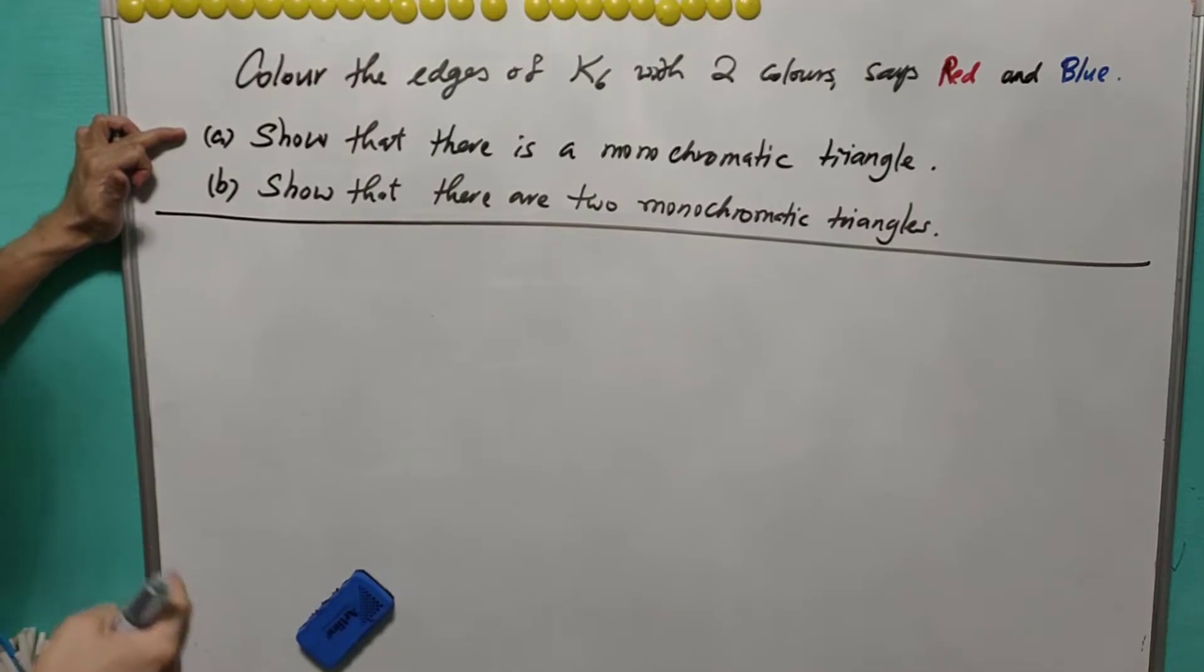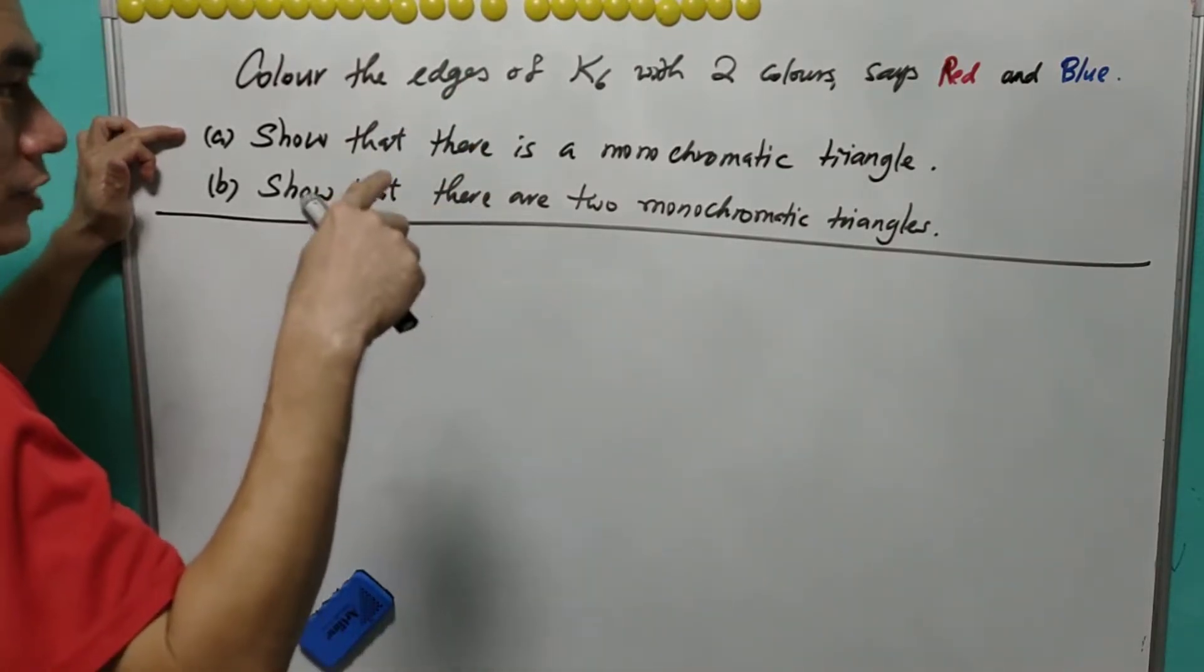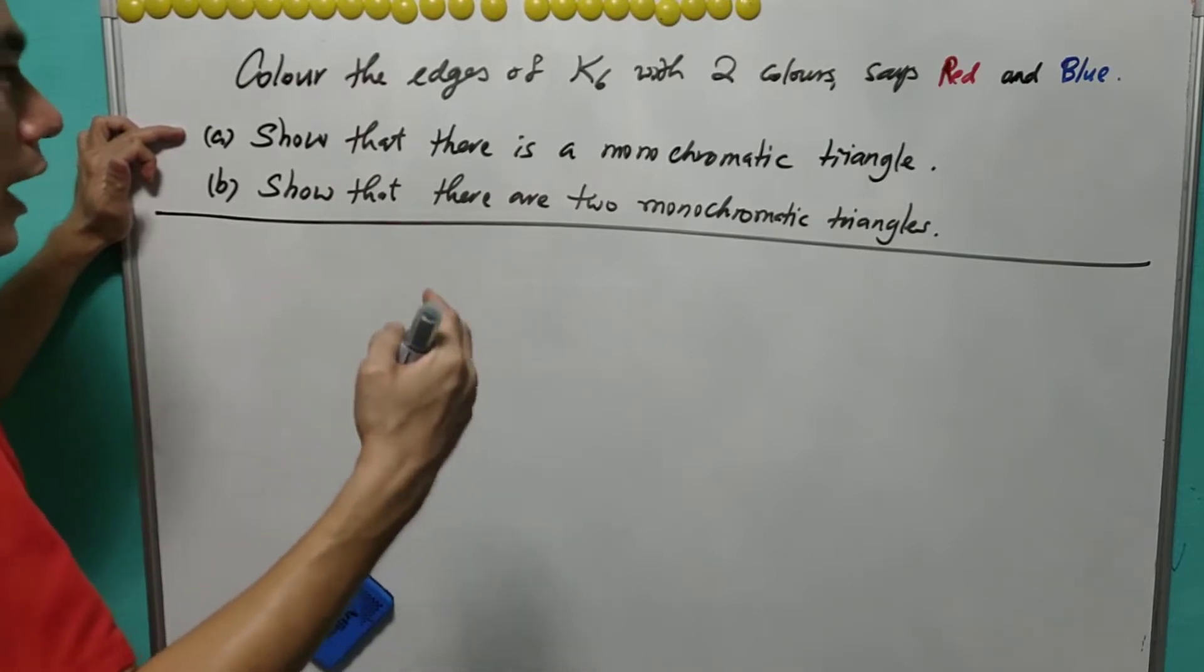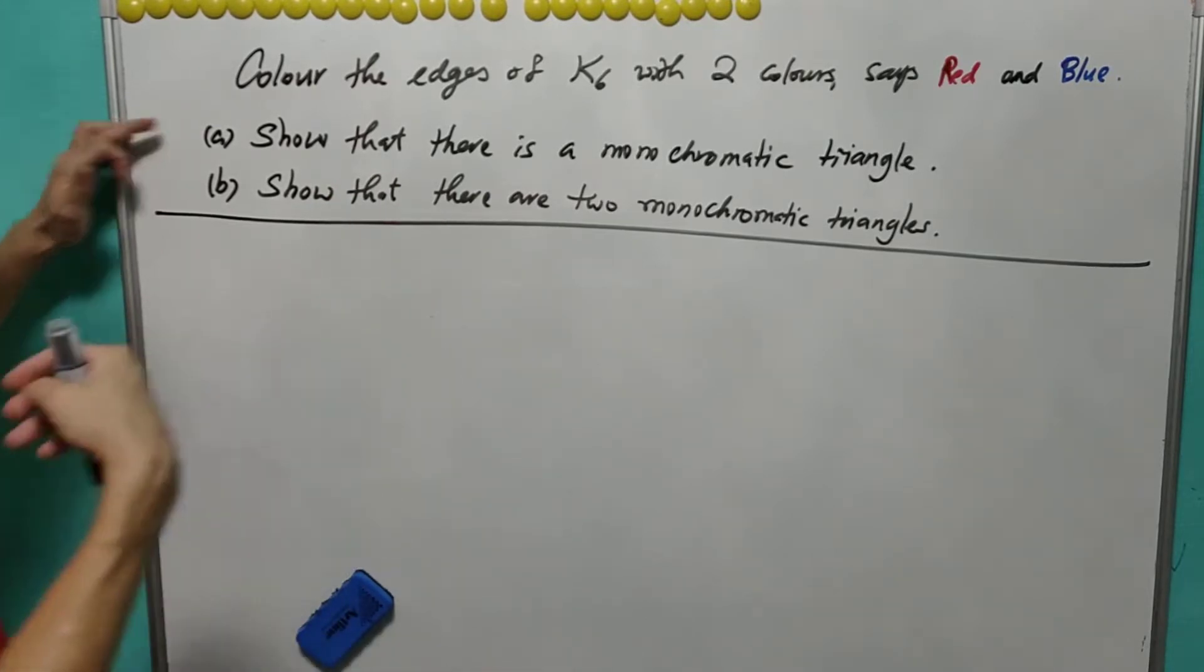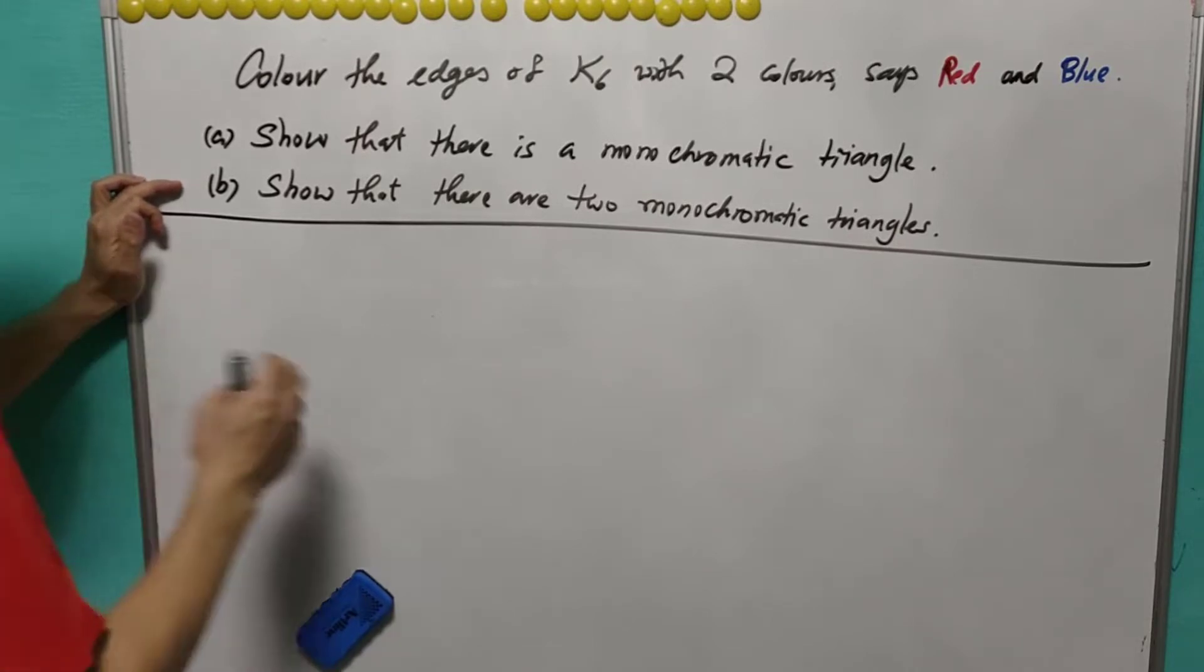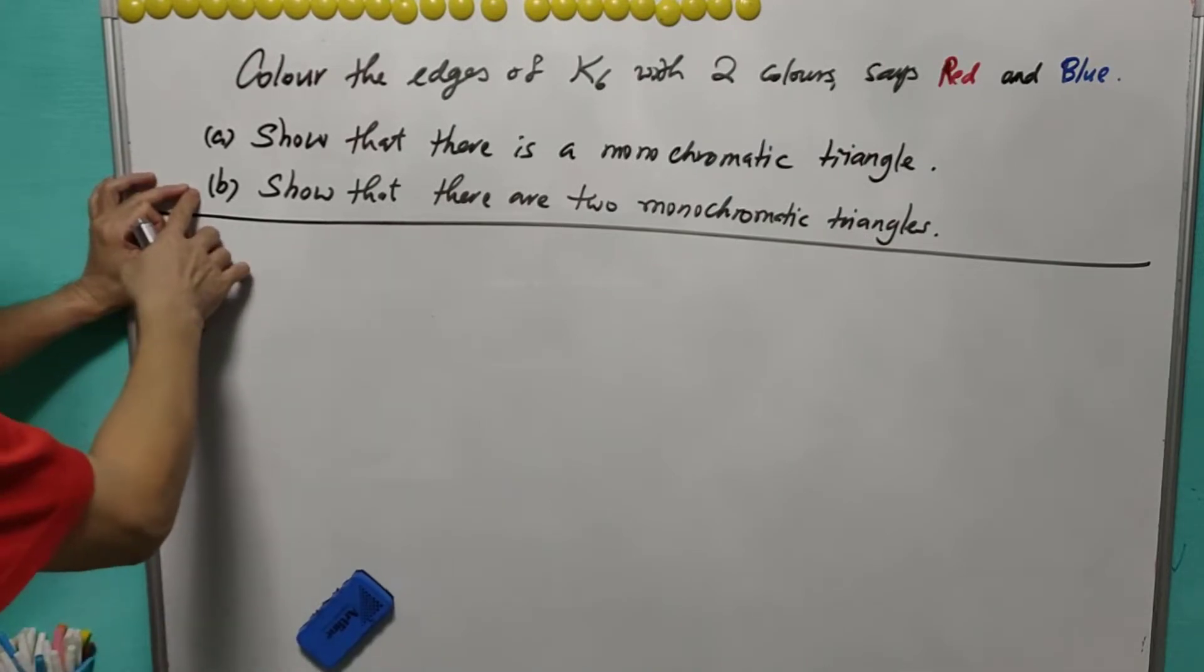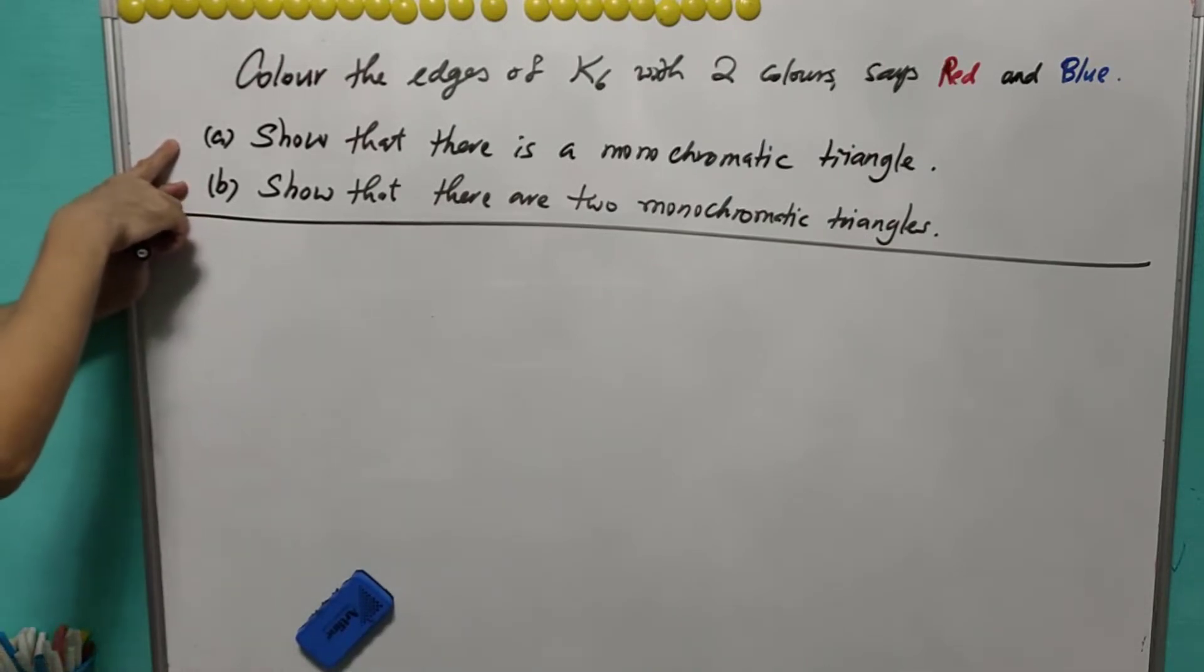Part A is a classical question. We are asked to show that there is a monochromatic triangle, meaning that the edges of the triangle are all of the same color, either all red or all blue. Part B is more interesting. We are asked to show that there are two monochromatic triangles. From here, if B is true, then A automatically is true.